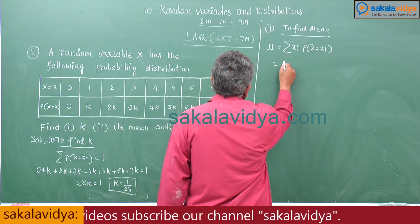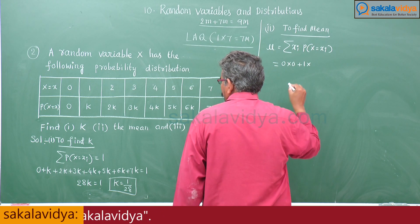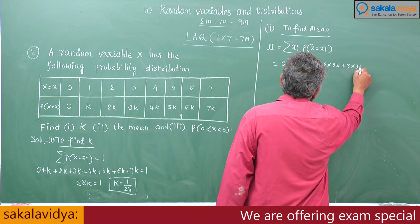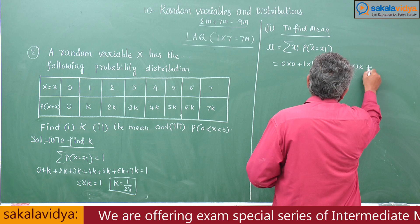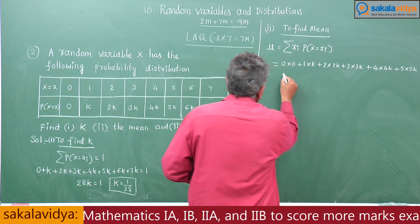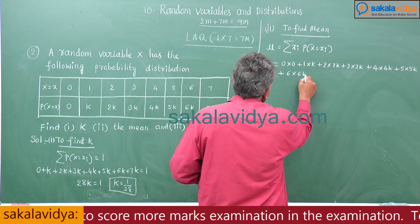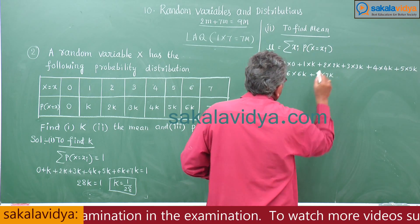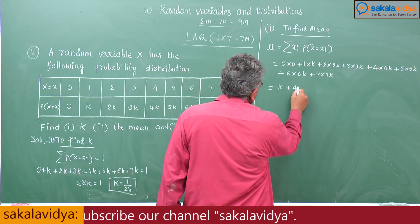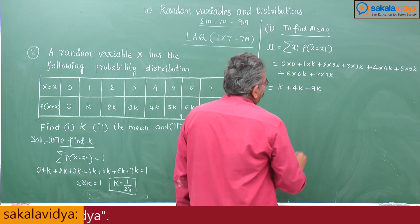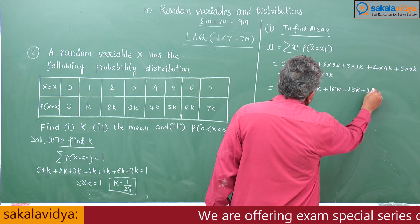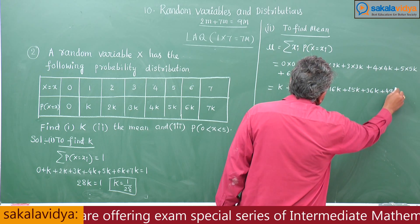So, 0 into 0 plus 1 into K plus 2 into 2K plus 3 into 3K plus 4 into 4K plus 5 into 5K plus 6 into 6K plus 7 into 7K. This equals K plus 4K plus 9K plus 16K plus 25K plus 36K plus 49K. Let's sum up.